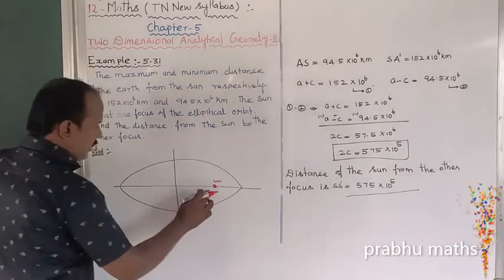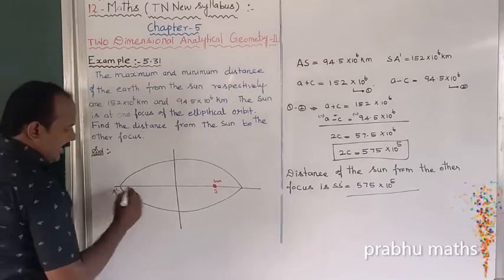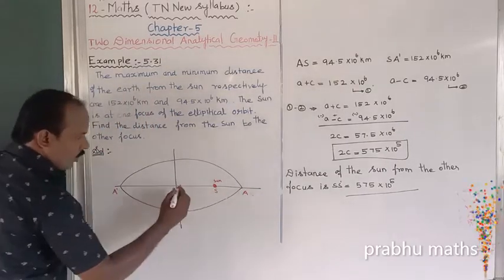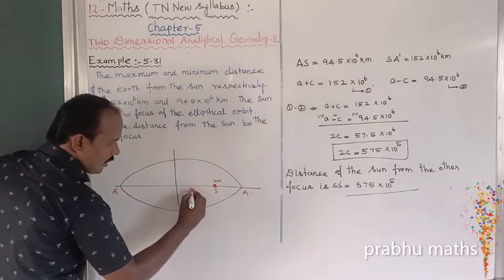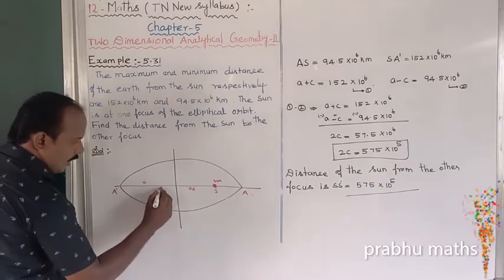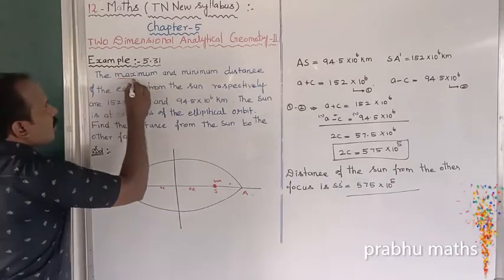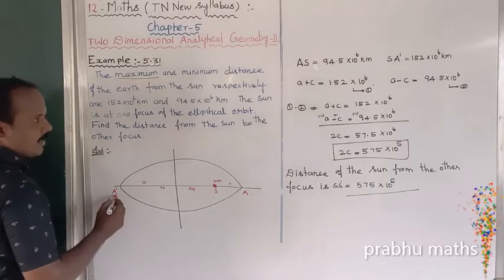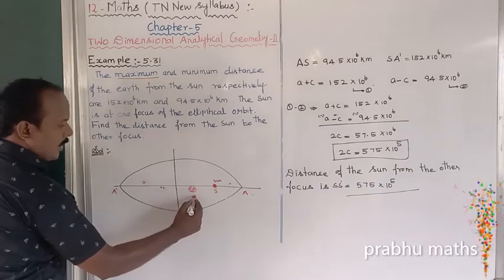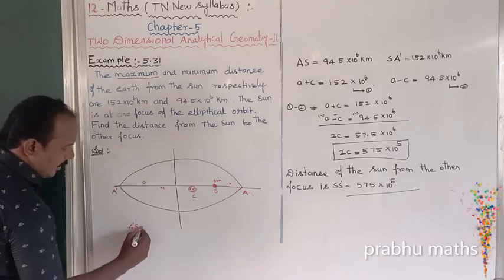The Sun is denoted by S. The vertices are labeled A dash and A. The maximum distance is S to A dash, which equals a plus c, where c is the distance AE (the focal distance from center to focus). So the maximum distance SA' = a + c.